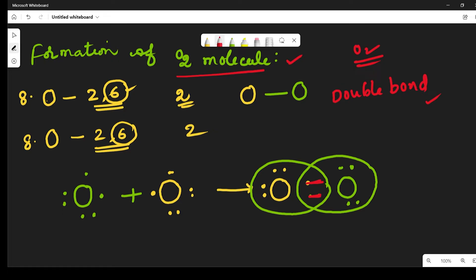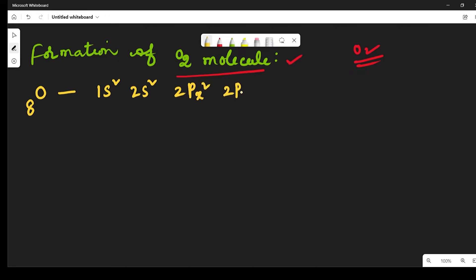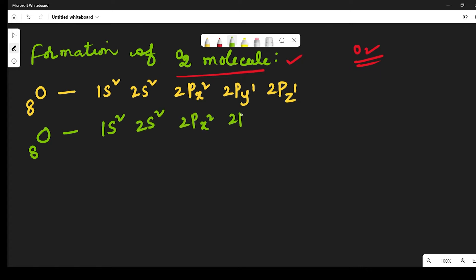Let us see whether the bonds will be sigma bond or pi bond, and how many sigma bonds and pi bonds there will be. The electronic configuration of the oxygen atom is 1s², 2s², 2px², 2py¹ and 2pz¹. The last two electrons — in 2py and 2pz — are participating in the bond formation, because each oxygen atom is contributing 2 electrons only.